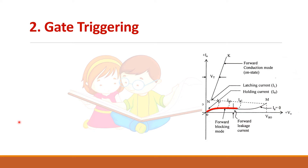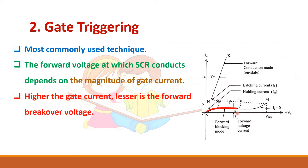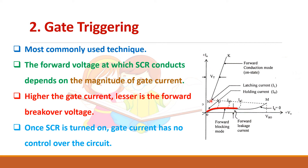Gate triggering is the most commonly used technique. In this method, in the forward blocking mode, we apply the gate signal, and once the gate signal is applied, the SCR goes into conduction. The voltage at which SCR goes into conduction depends upon the magnitude of the gate current. If a higher gate current IG1 is given, it will conduct earlier. Once the anode current exceeds the latching current, you can remove the gate current.